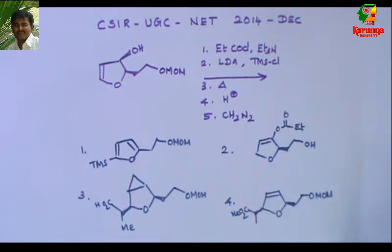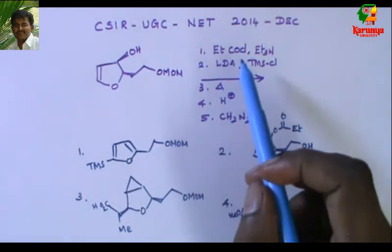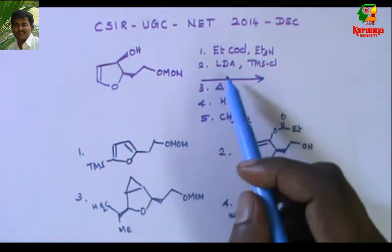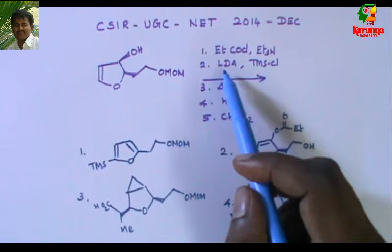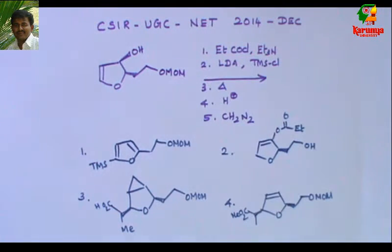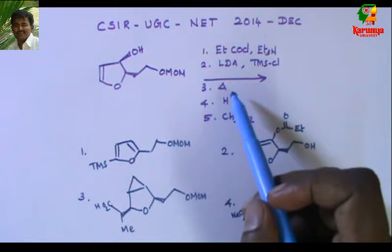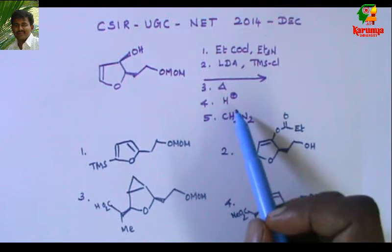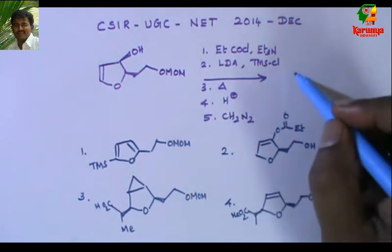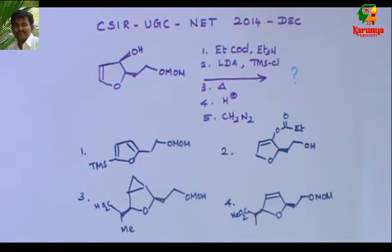Here is the problem: when this allylic alcohol is treated with propionyl chloride and triethylamine, followed by treatment with LDA (lithium diisopropylamide) and TMS chloride, then heating, then treatment with H+, and finally reaction with diazomethane — what is the product?